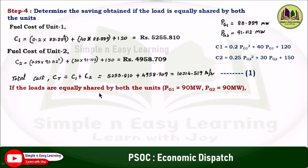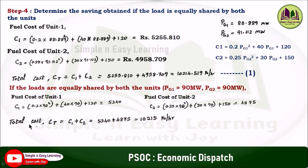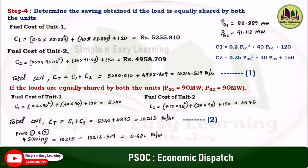If the load is equally shared by both units, PG1 equal to 90 megawatt and PG2 equal to 90 megawatt. In this case, the fuel cost for unit 1 is rupees 5,340 and the fuel cost of unit 2 is rupees 4,875, giving a total cost of 10,215 rupees per hour. Comparing the two cases, the savings will be 10,215 minus 10,214.519, which equals 0.481 rupees per hour.